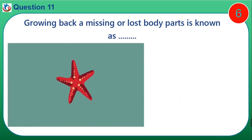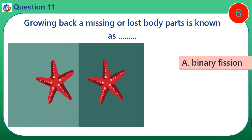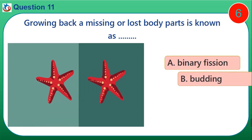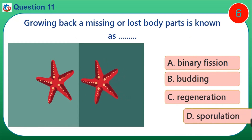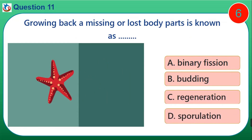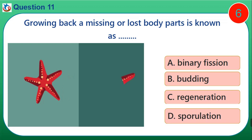Question 11. Growing back missing or lost body parts is known as: A. Binary fission. B. Budding. C. Regeneration. D. Sporulation.